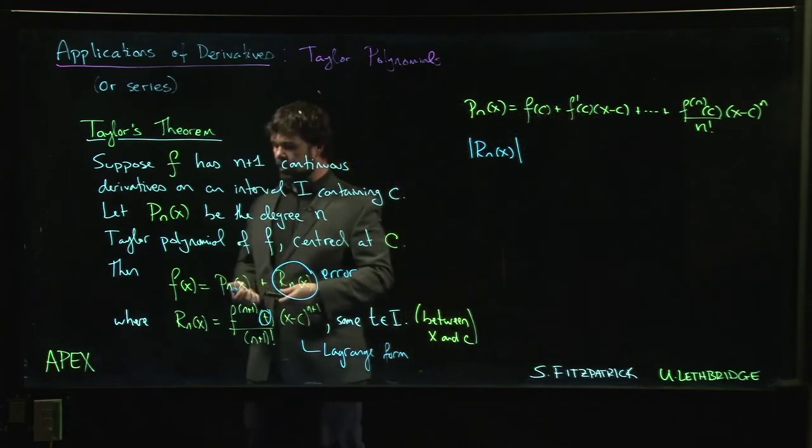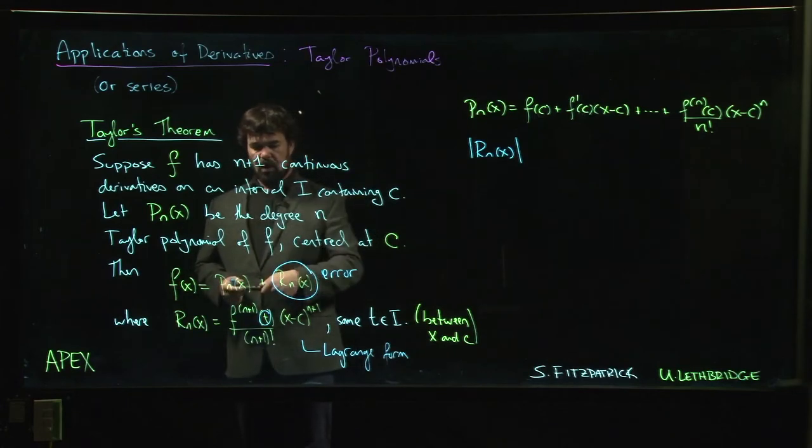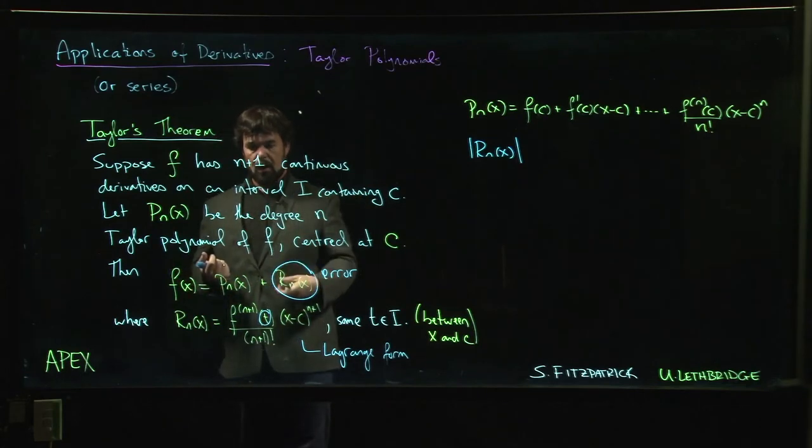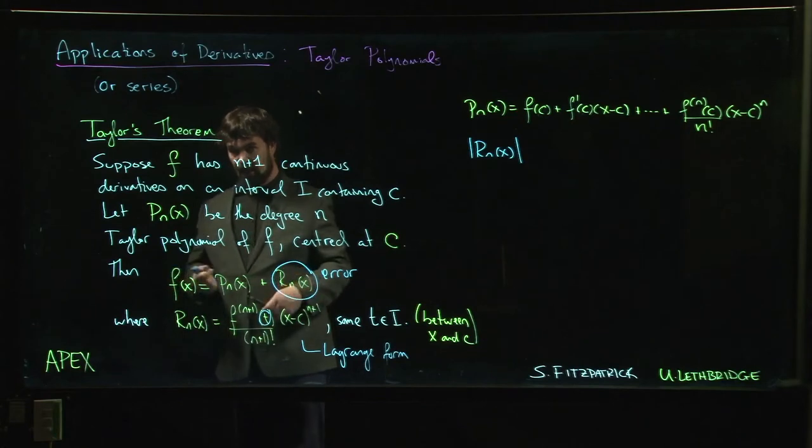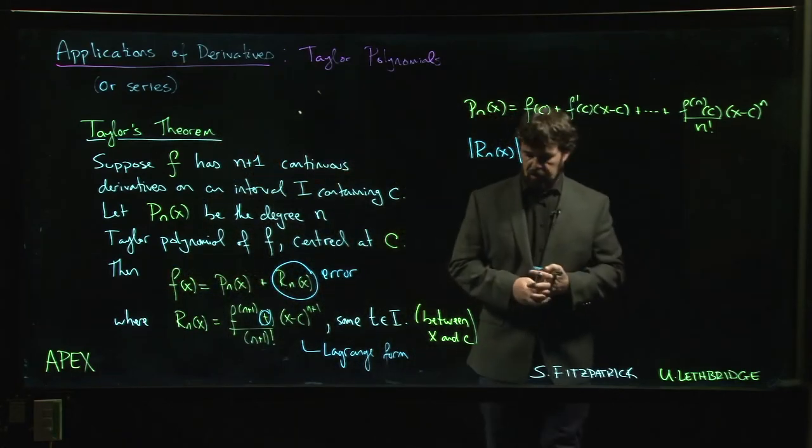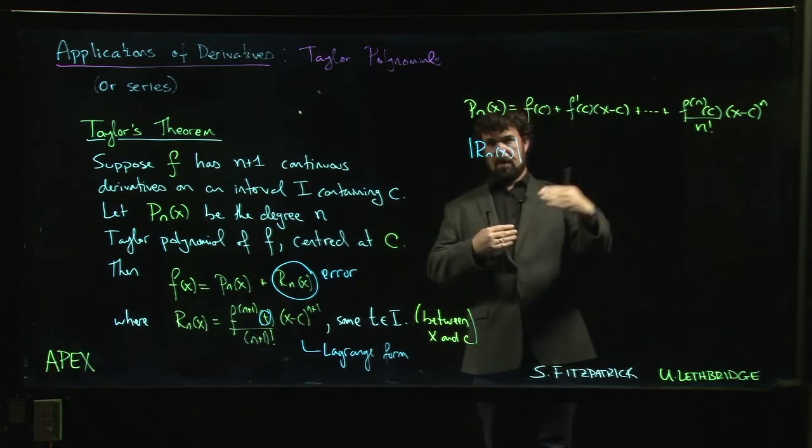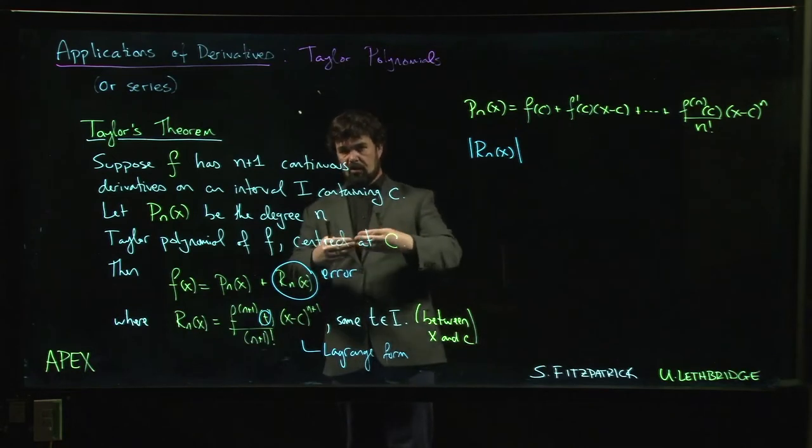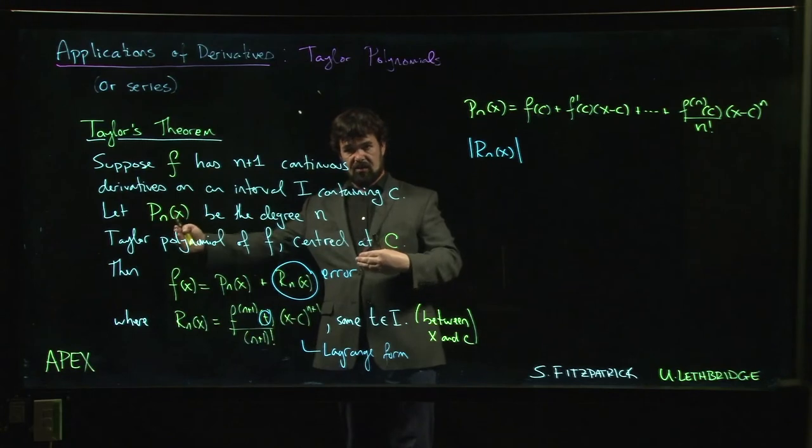What you're doing with Taylor's theorem is you're not trying to compute this error, this remainder term, exactly, because of course if you could do it exactly you would know the exact value. The point is to get some measure of how big this thing can get. When you're dealing with error, you want a maximum error, you want an upper bound.